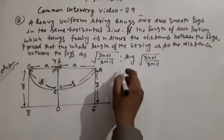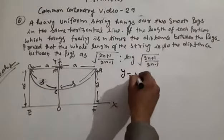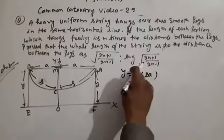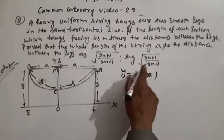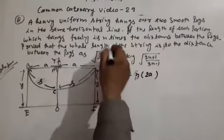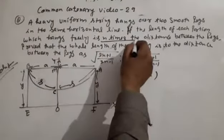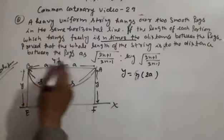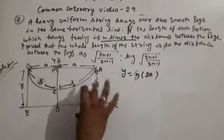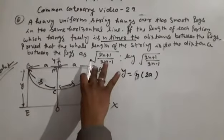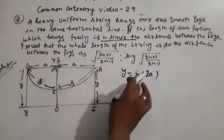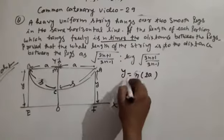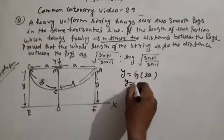Given condition: y = n × 2a, which means y equals n times the distance between the pegs. So y = 2an.